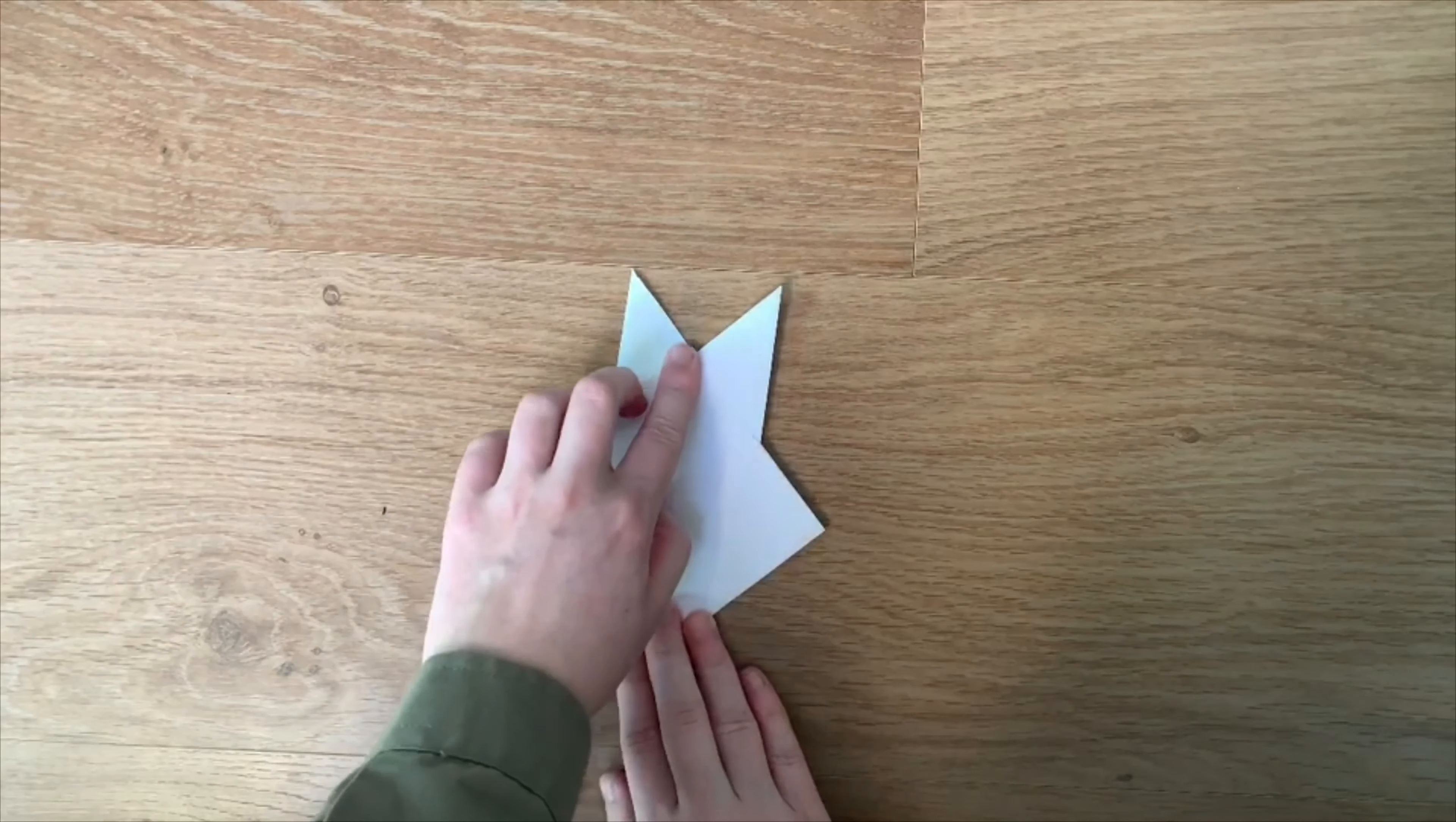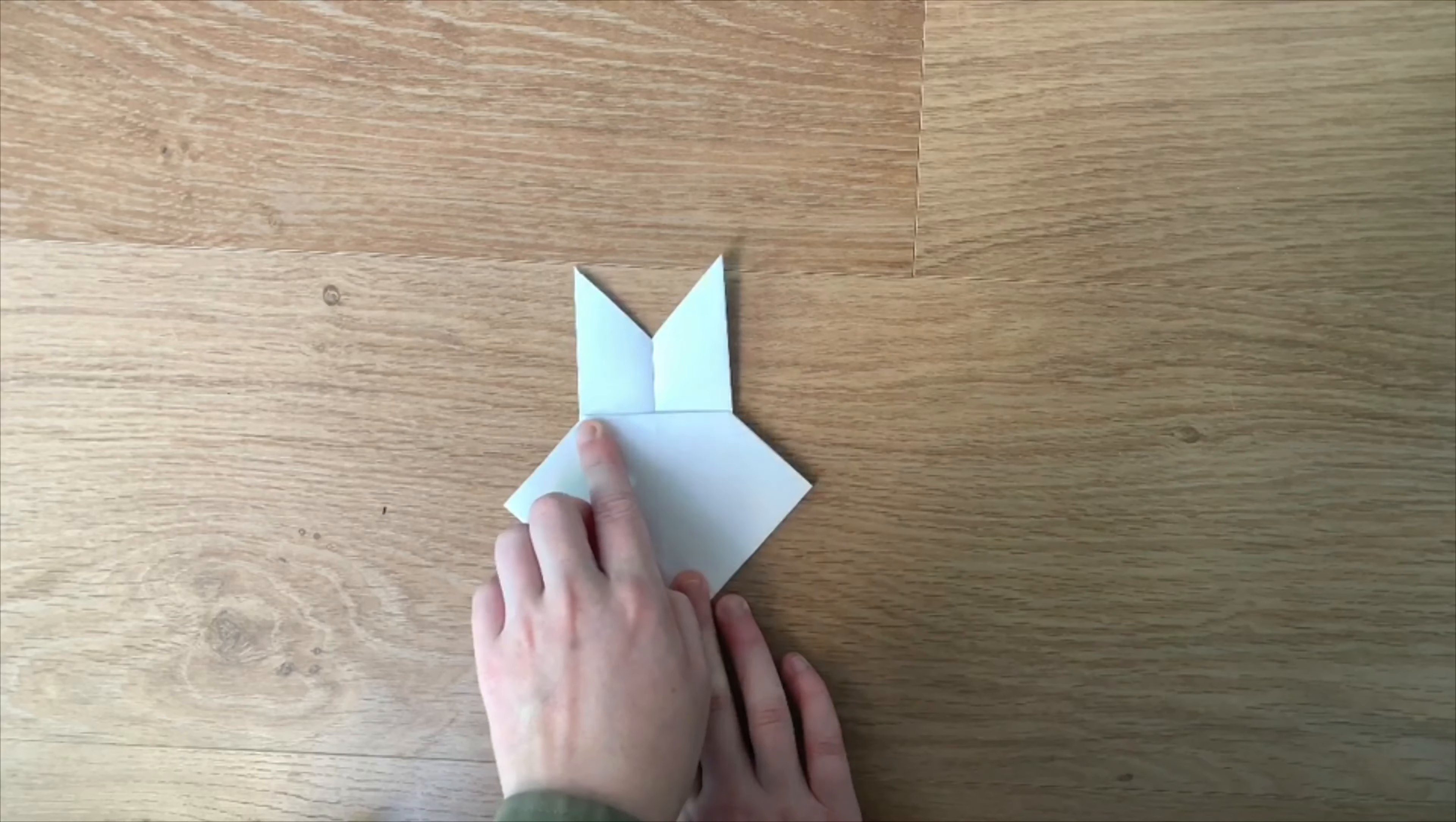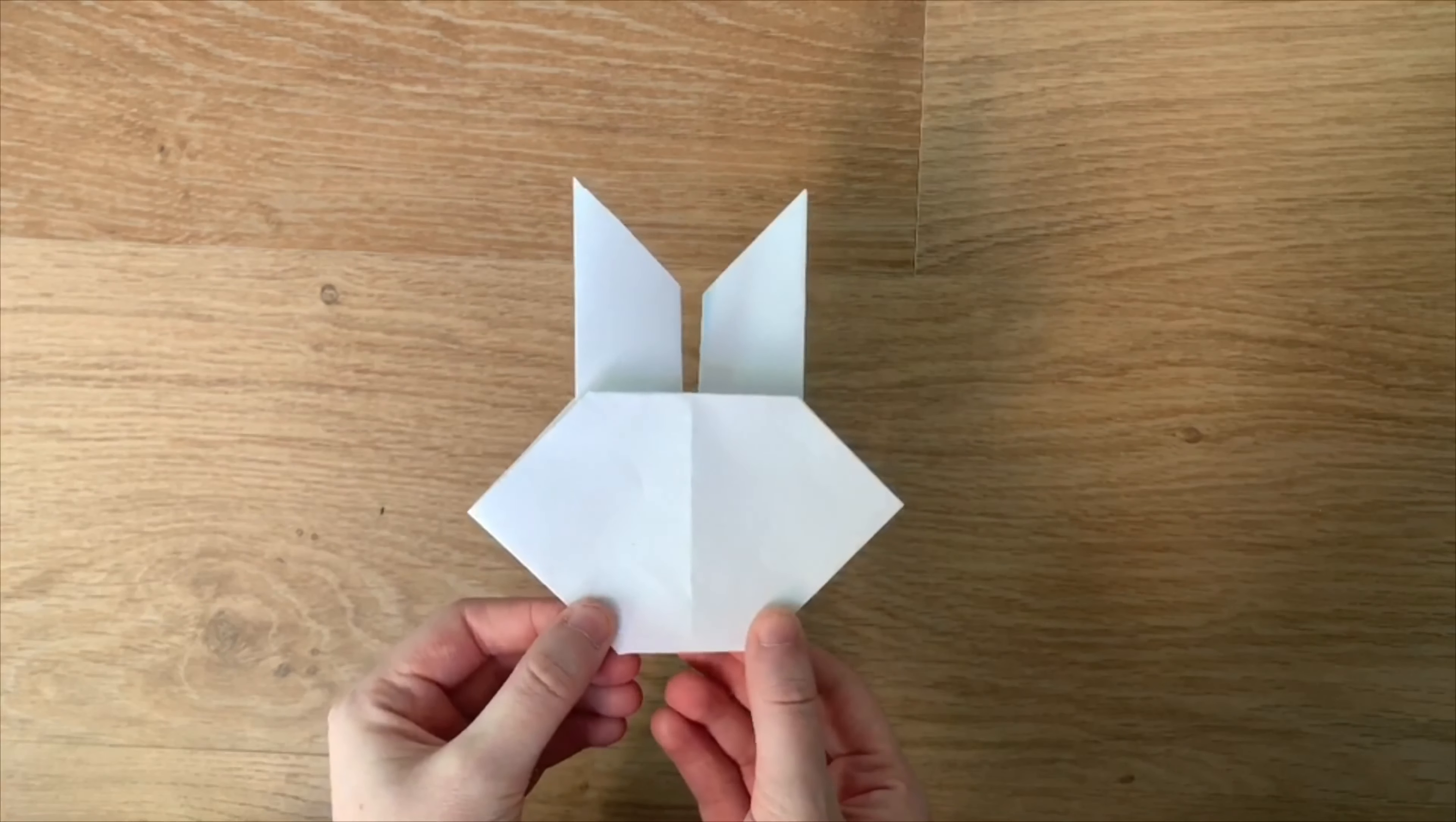So then you have this flap here. You want to take this and just fold it under. And flatten that out. You can fold it under however much you want, but I fold it under so it matches the width of the ears. Then take this bottom corner and fold that under too, because then you have a flat chin of your rabbit. So there you go. That's your rabbit.